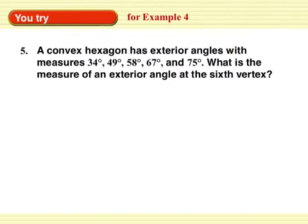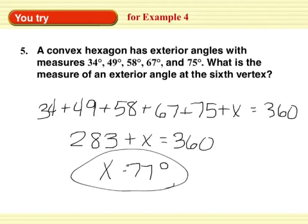All right, you try. Okay, I'm going to push pause. Convex hexagon, exterior angles. What's the measure of the 6th vertex? Push pause. X equals 77 degrees.